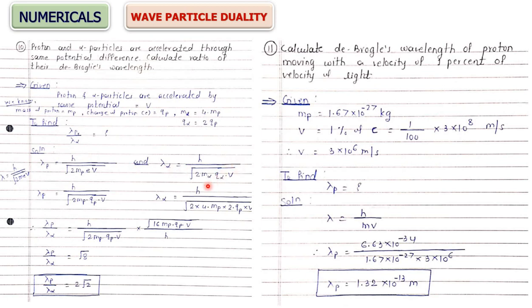Similarly write the formula for lambda of alpha particle: λ = h / √(2m_α · q_α · V), where mass of alpha particle = 4 × mass of proton and charge of alpha particle = 2 × charge of proton. Taking the ratio of lambda of proton to lambda of alpha particle, most quantities cancel and you get √8 = 2√2.